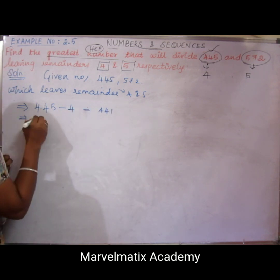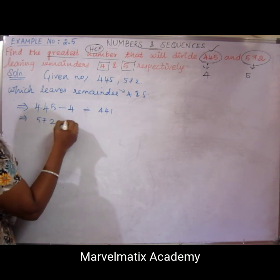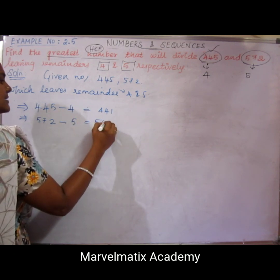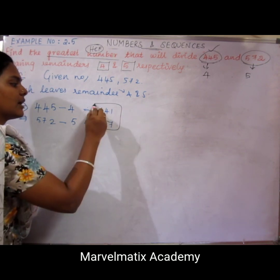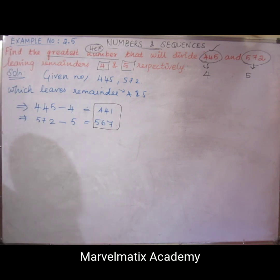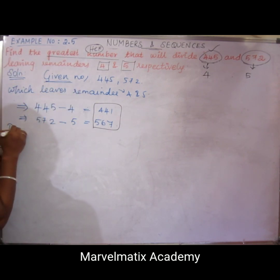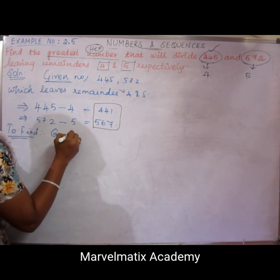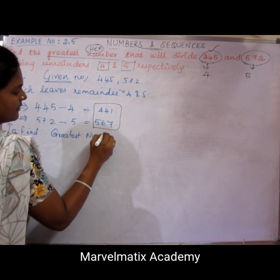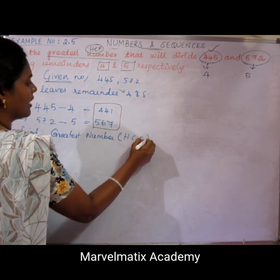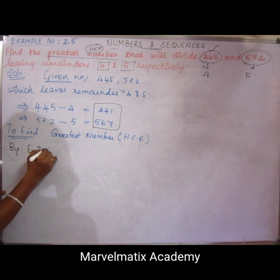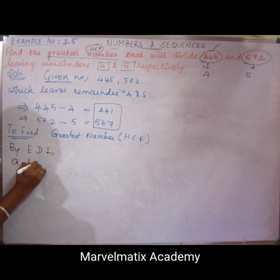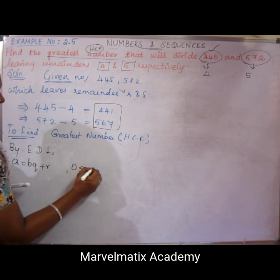So 572 minus 5 equals 567. These two numbers — 441 and 567 — are our working numbers. We find their HCF. As per Euclid's division lemma: a = bq + r, where 0 ≤ r < b.